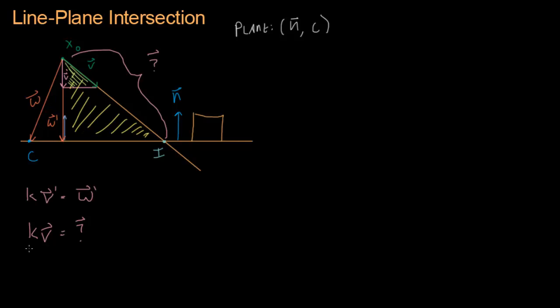And that's good news because x-naught plus the question mark vector is going to equal i. It's going to equal i. If we start with x-naught, and we add our question mark vector, that's going to equal i.